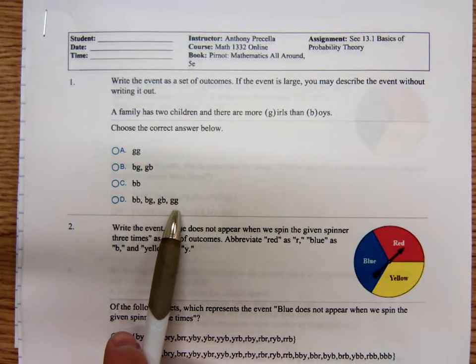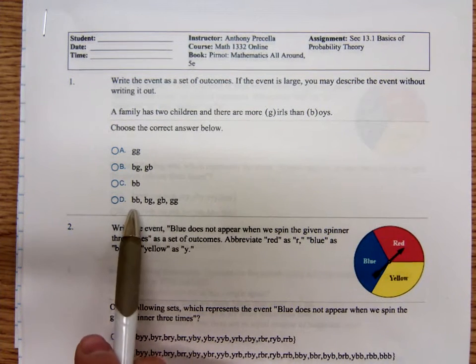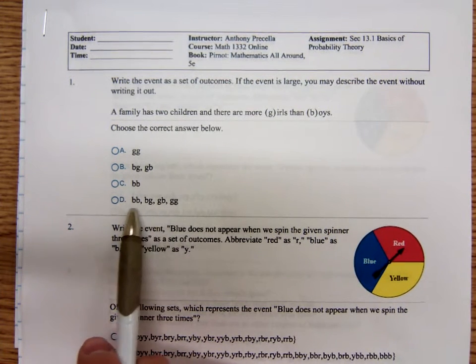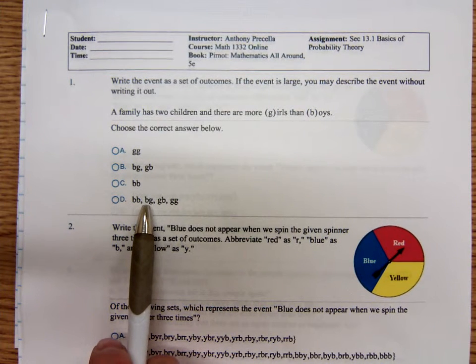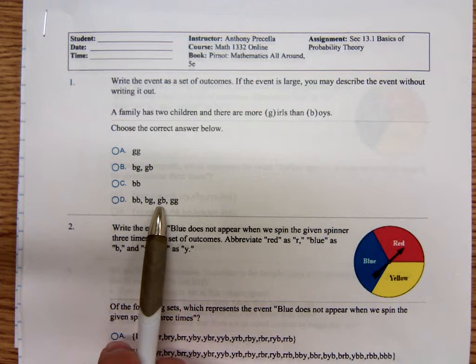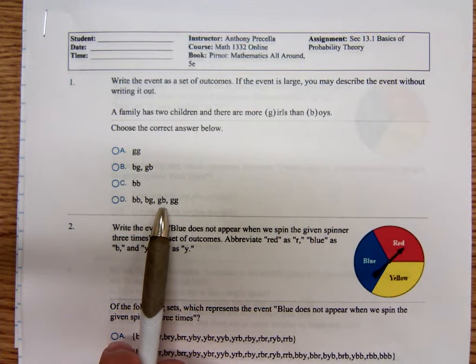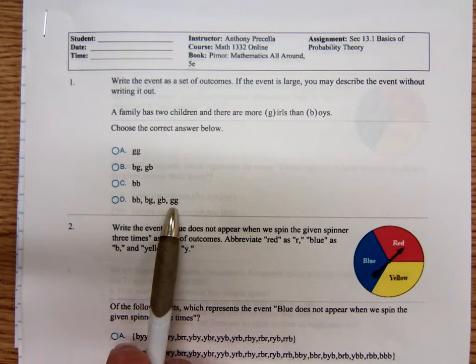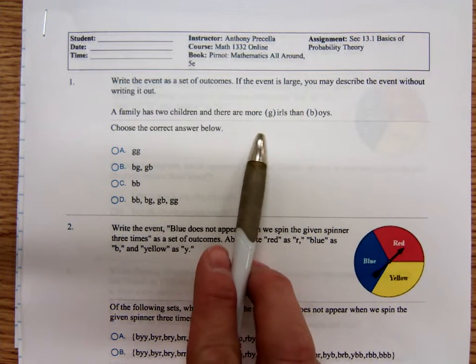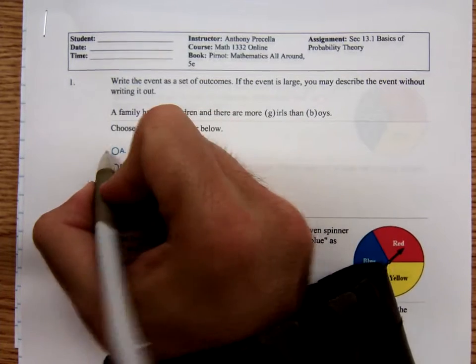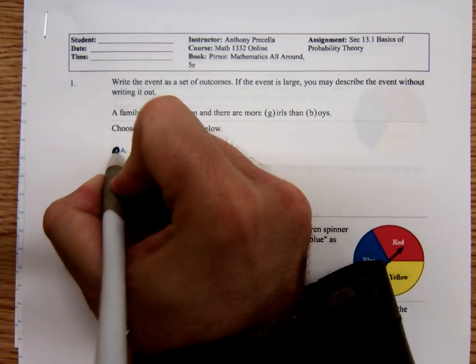Surely not this one. This is all the possible outcomes. D, you could have two boys, or the first one a boy, second one a girl, or the first child a girl, second one a boy, or just both of them girls. How could they have more girls than boys? Would be if they just had two girls.